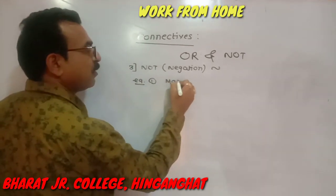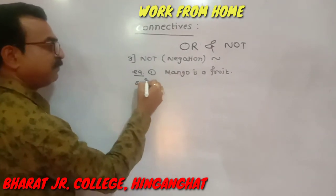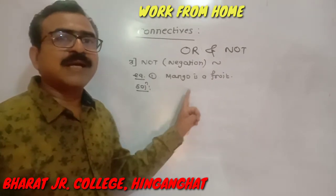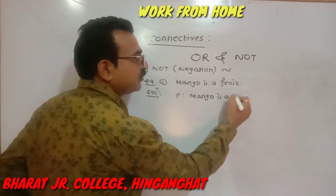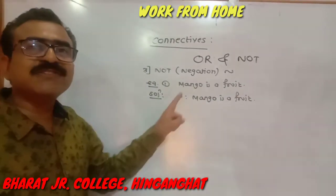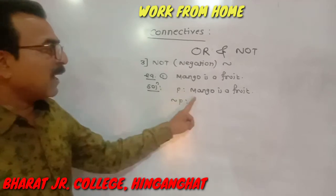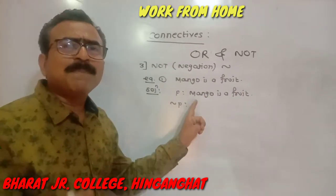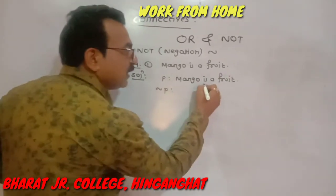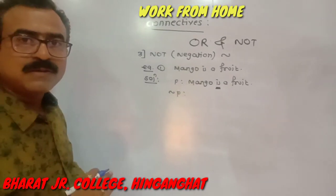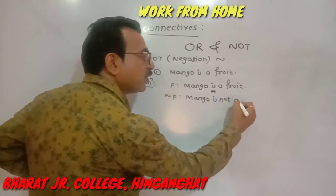First example: 'Mango is a fruit.' Your question is: write its negation. The given statement is 'Mango is a fruit,' represented by p. Now write its negation. Our first rule says: while performing the negation of a given statement, use NOT after the verb. Here, IS is the verb. So its negation is: 'Mango is NOT a fruit.'